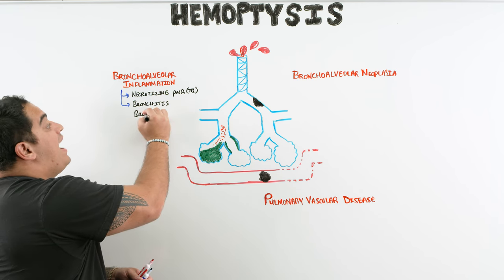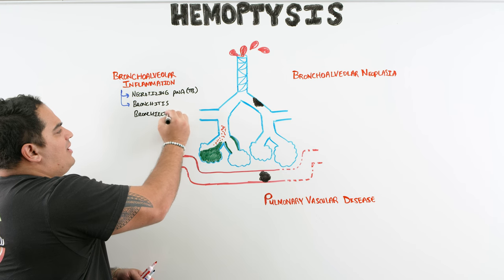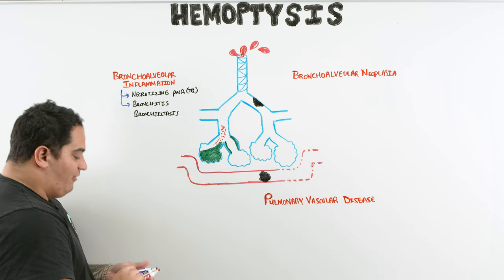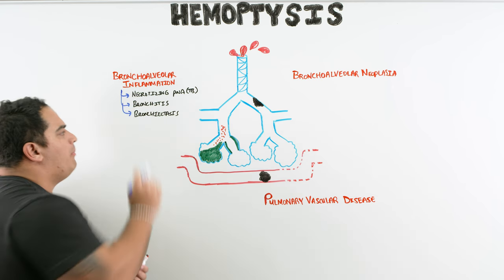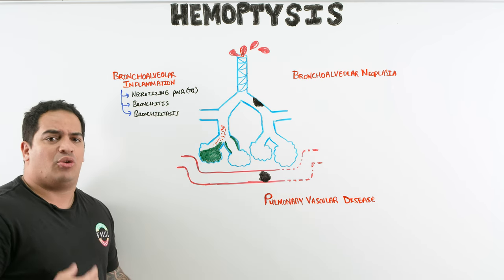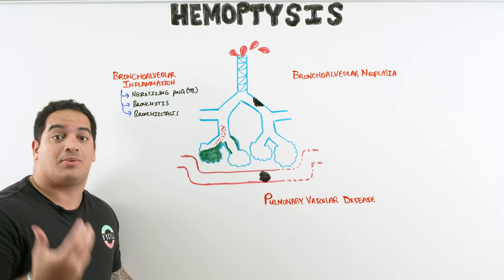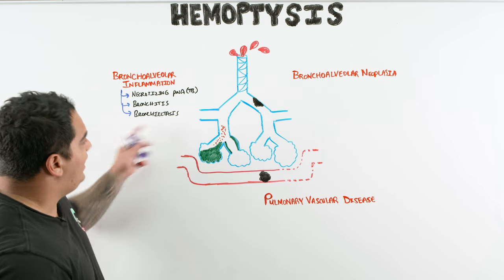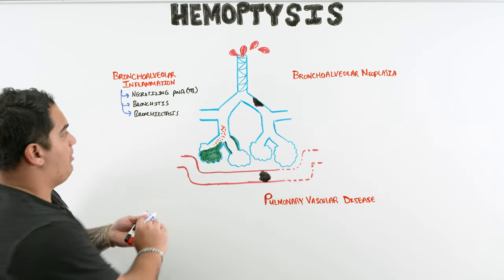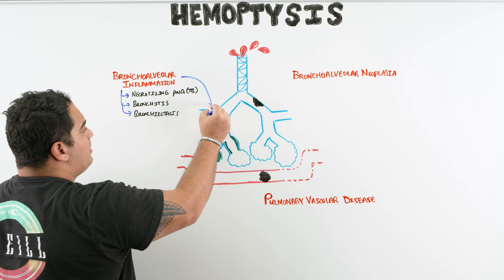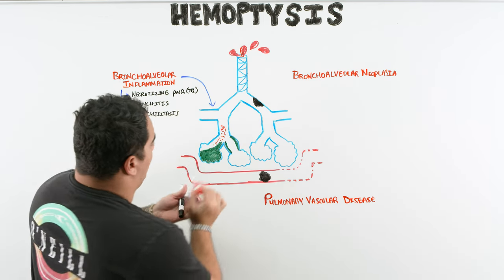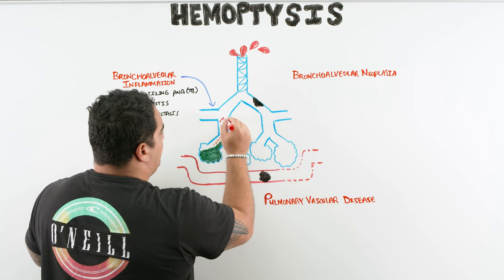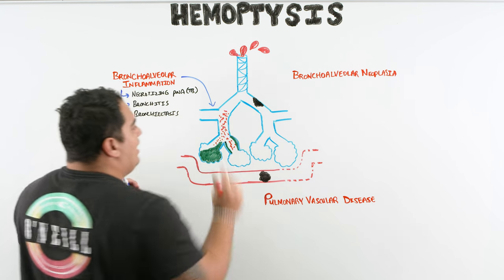Bronchiectasis is a very common cause of massive hemoptysis. Massive hemoptysis is sometimes defined by volume, but I think it's better determined by the degree of hemodynamic instability or respiratory failure. Either way, these are the big things precipitating the process where blood leaks into the airway via erosion of the bronchial arteries.